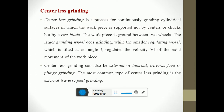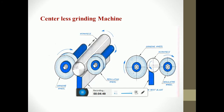Centerless grinding is a process for continuously grinding cylindrical surfaces in which the work piece is supported not by centers or chucks but by a rest blade. The work piece is ground between two wheels. The larger grinding wheel does the grinding, while the smaller regulating wheel, which is tilted at an angle, regulates the velocity VF of the axial movement of the work piece. Centerless grinding can be external or internal, transverse feed or plunge grinding. The most common type is the external transverse feed grinding. The work piece is placed over a small work rest blade and the regulating wheel causes the work piece to rotate while the grinding wheel rotates in the opposite direction, thus removing material.